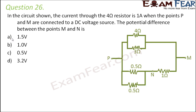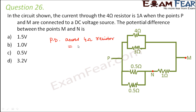Question number 26: in the circuit shown, the current through the 4 ohm resistor is 1 ampere when points P and M are connected to a DC voltage source. The potential difference between points M and N is to be found. The potential across the 4 ohm resistor — since the current through it is 1 ampere — would be equal to I into R, which is 1 ampere into 4 ohms, equal to 4 volts.